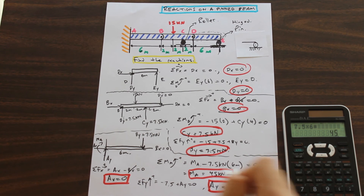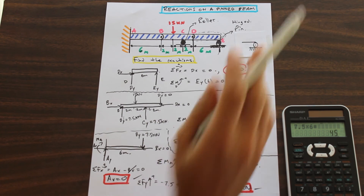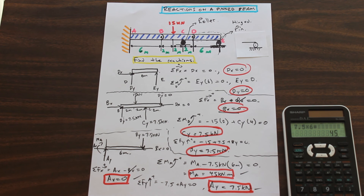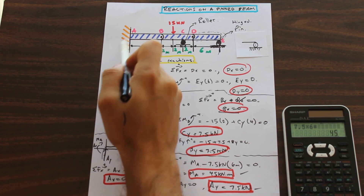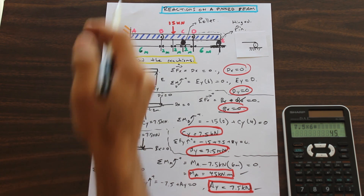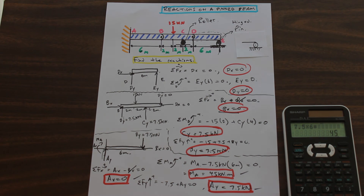So we've solved for the three reactions: the moment reaction, AX, and AY. The key takeaways from this video: whenever you see a pin, break the beam into simpler pieces and eliminate variables. Also know the different types of supports and their reactions — a cantilever beam has three reactions, a pin support has two, and so on. There's no substitute for practice, but I hope this gave you good ideas on how to solve these types of problems. Thanks for watching — like and subscribe if you enjoyed the video.